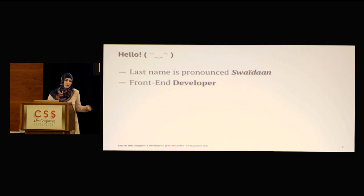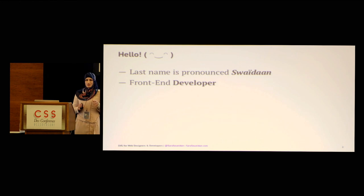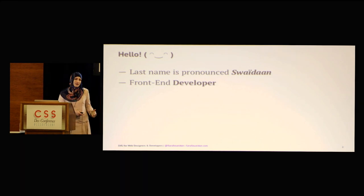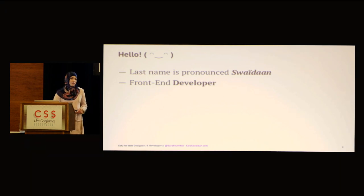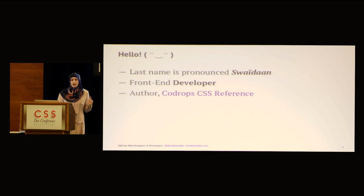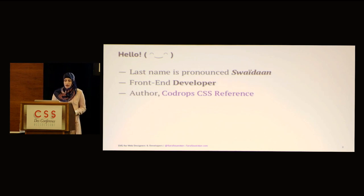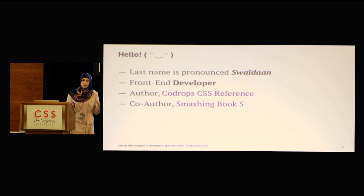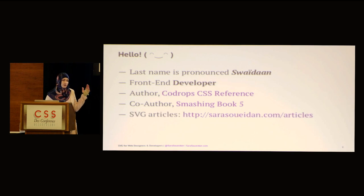I'm a front-end developer with an emphasis on developer, because a lot of people tend to forget that I develop websites for a living. Because of all the writing and speaking that I do, they only think of me as a writer and a speaker. I used to write a lot about CSS and ended up writing a CSS reference for Code Drops. In the last two years, I've been focusing more on SVG, and I contributed to the last Smashing Book, number five, which is all about responsive web design with a really long chapter about SVG as well. I write a lot of SVG articles on my blog.